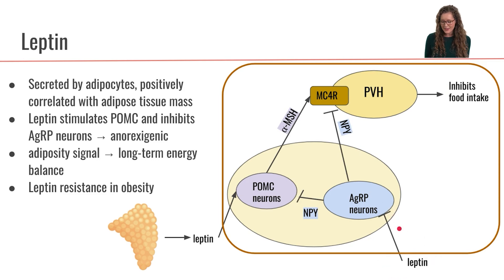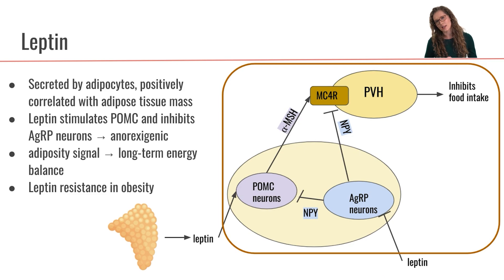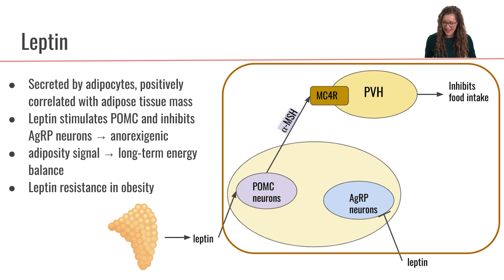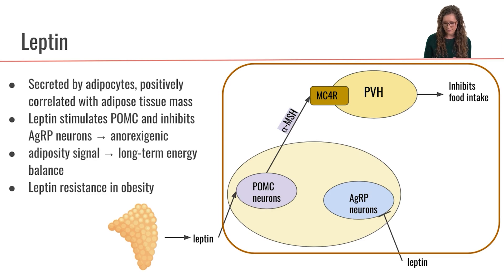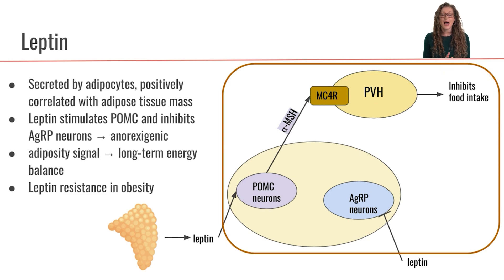Additionally, leptin also inhibits the agouti-related peptide neurons. Therefore, the AgRP neurons are no longer secreting their inhibitory neurotransmitter NPY, so that signal disappears. Overall, leptin is an anorexogenic hormone, inhibiting food intake.